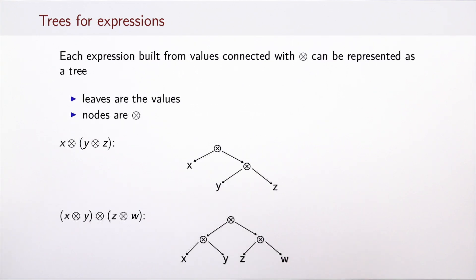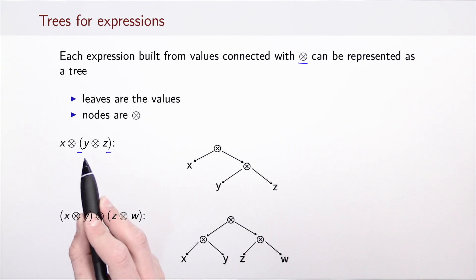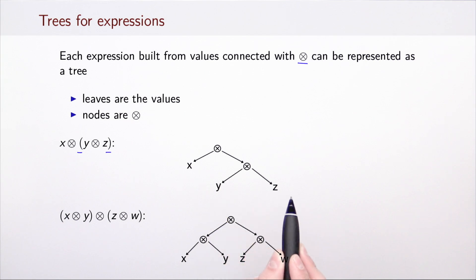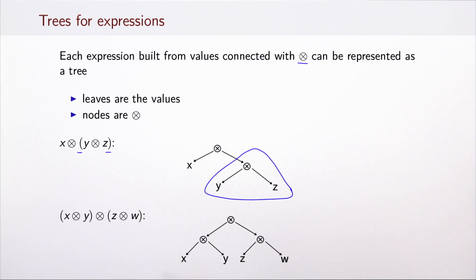Each expression built from values combined using an associative operator can be represented as a tree. In this tree, leaves represent values like x, y, and z, while nodes represent the application of the operation. The shape of the tree encodes where the parentheses were in the original expression. For example, parentheses indicating y and z should be combined first correspond to a subtree applying the operation to y and z. Similarly, x combined with y first and z combined with w gives another tree structure.